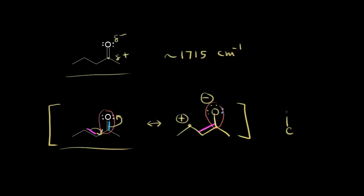In reality it's a hybrid of those two, so I'll draw a carbon bonded to oxygen with a partial bond — stronger than a single bond and not quite as strong as a double bond. Resonance lowers the double bond character of the carbonyl, weakening it. If you're weakening the bond, the value for K, the force constant, goes down. From earlier videos, if you decrease K you decrease the frequency and decrease the wave number where you find the signal. So the signal for the carbonyl moves down to approximately 1680 — definitely less than 1700 — because resonance is decreasing the bond strength.